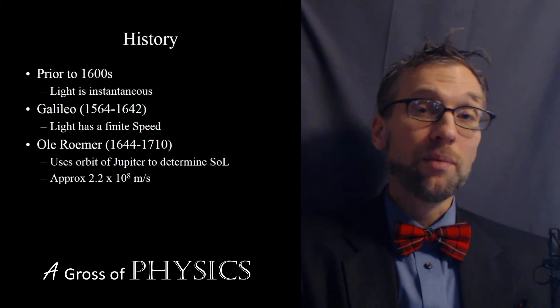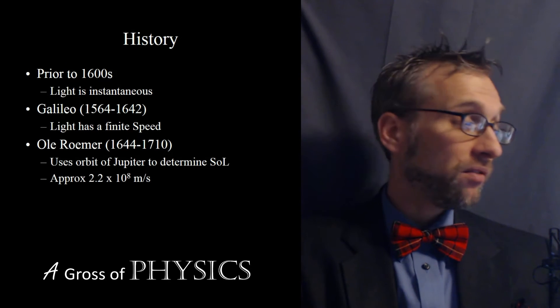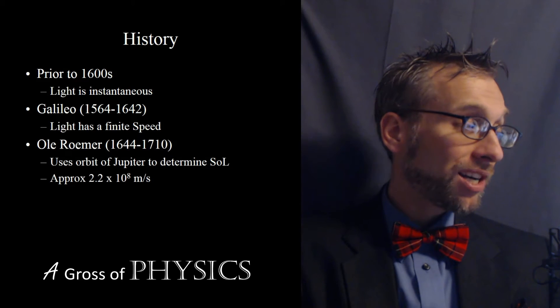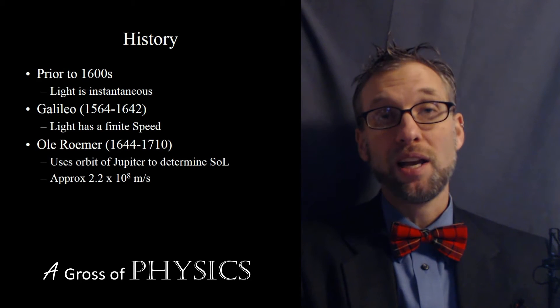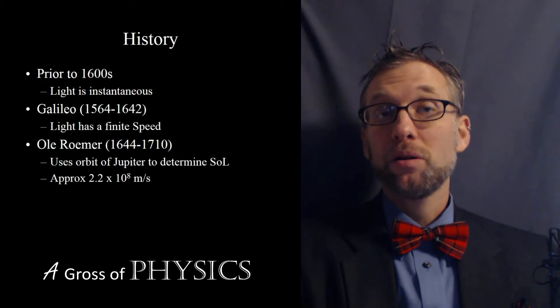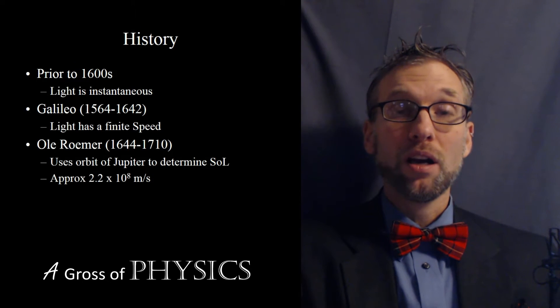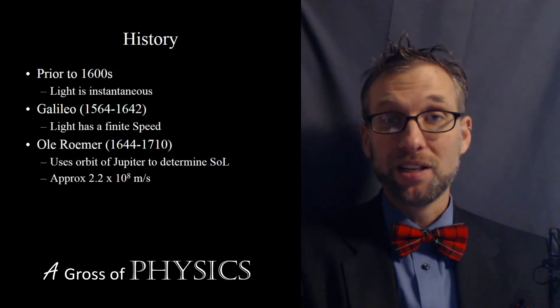Well, Romer was able to find a number that related the speed of light, and he got it to be approximately 2.2 times 10 to the 8 meters per second. A little low, but the same order of magnitude that we know the speed of light to be today.